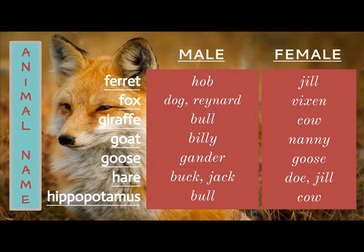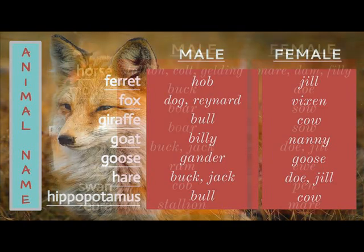A male hare is a buck or a jack, a female hare is a doe or a jill. A male hippopotamus is a bull, a female hippopotamus is a cow.